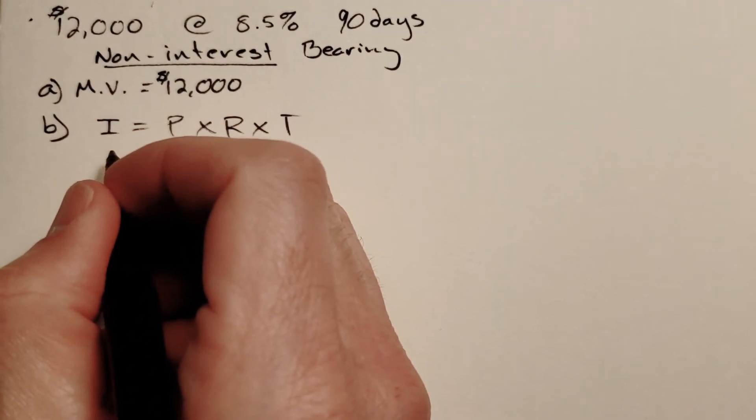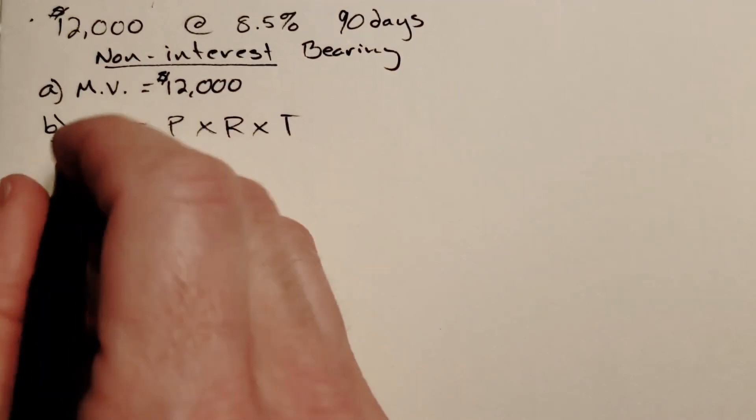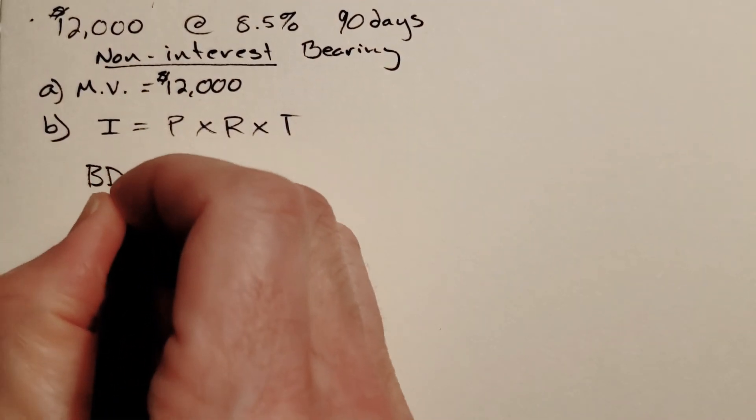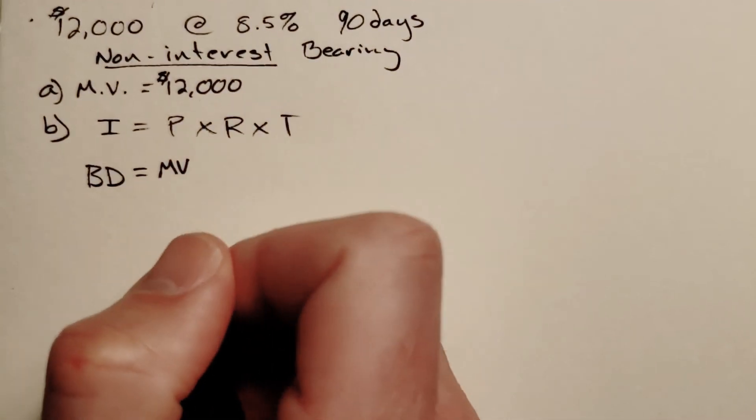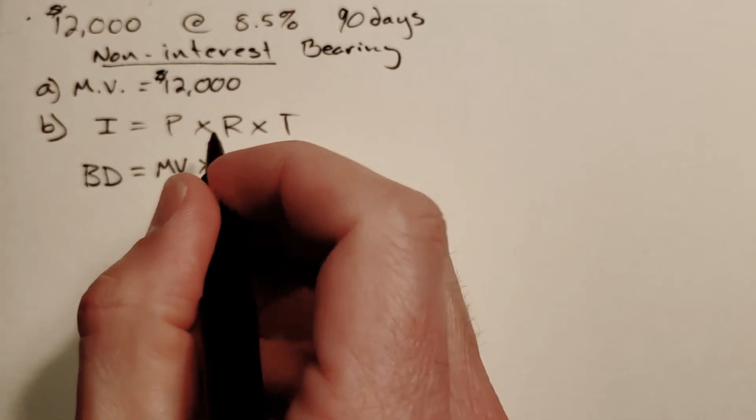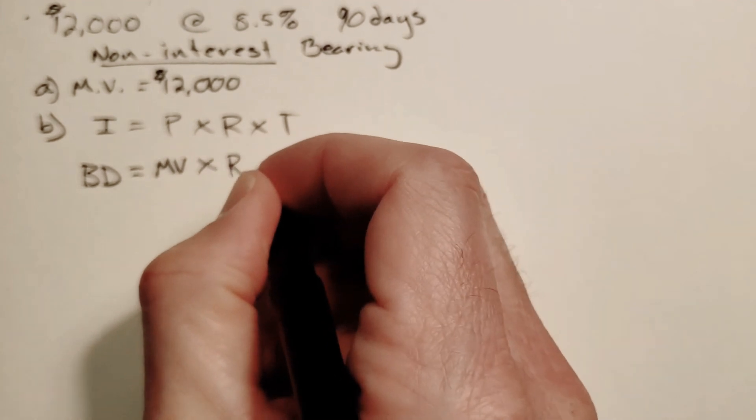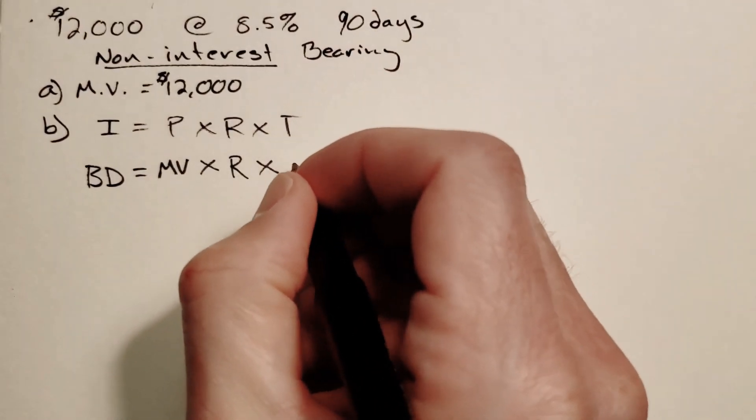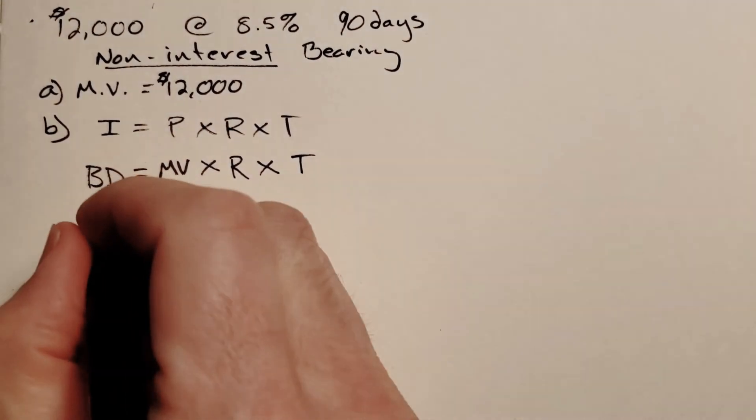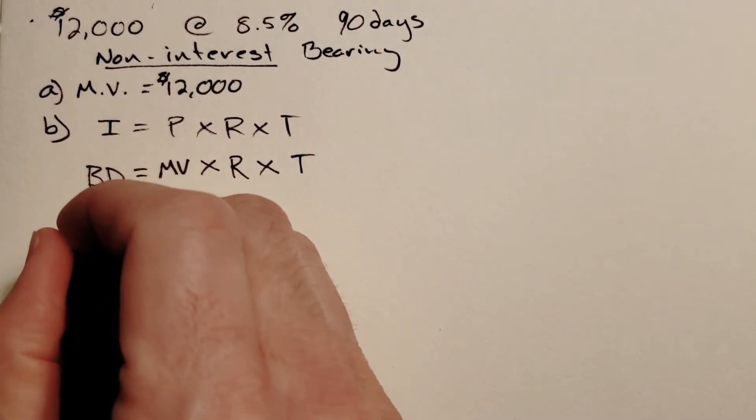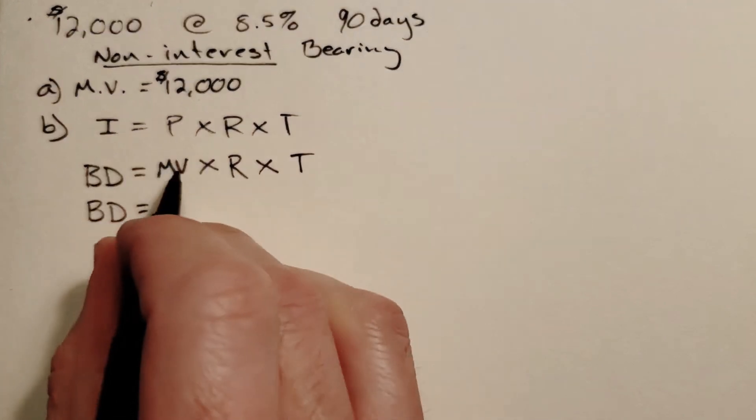In this non-interest bearing situation, we use basically the same equation, just with different names. Instead of interest we call it the bank discount, principal is the maturity value, the rate is the bank discount rate but we still abbreviate it with R, and time is still time.